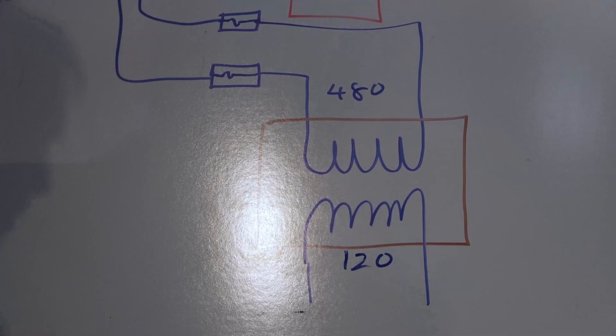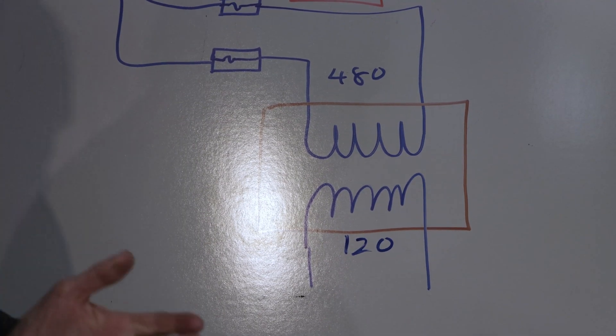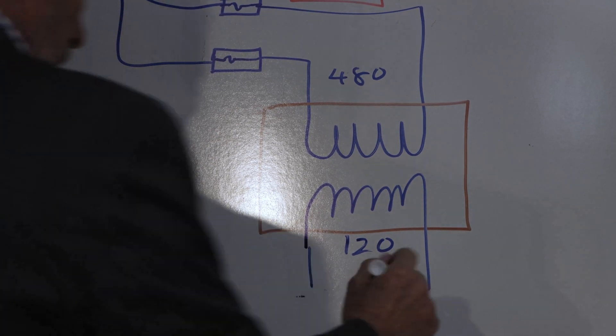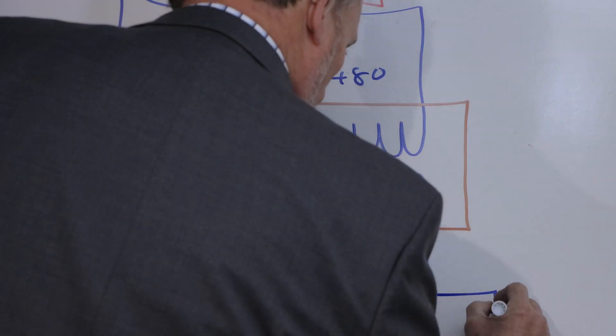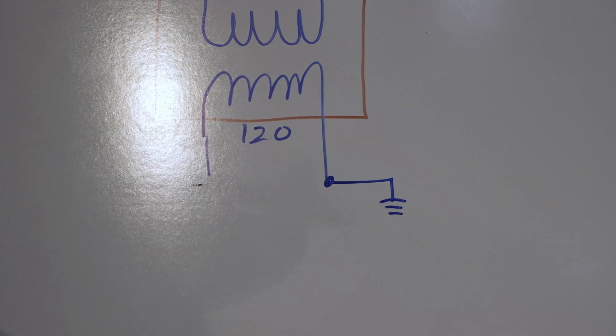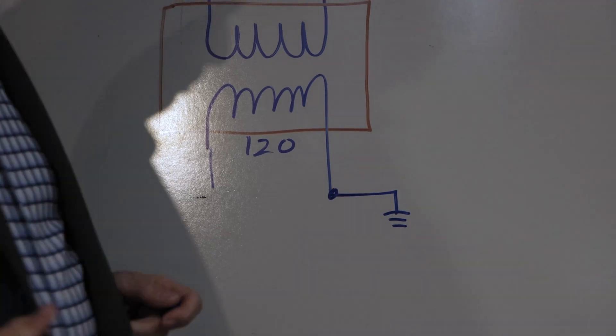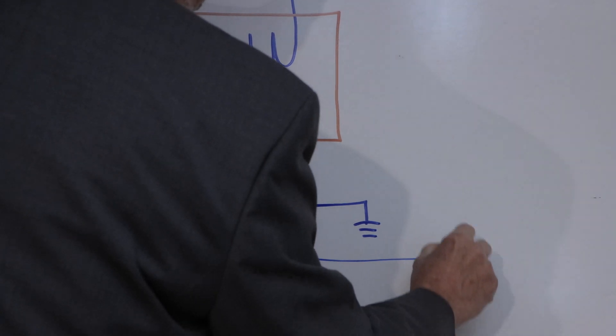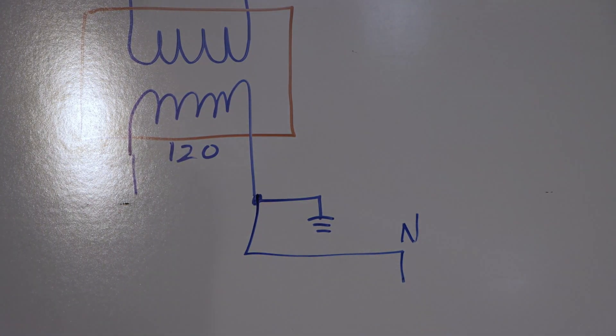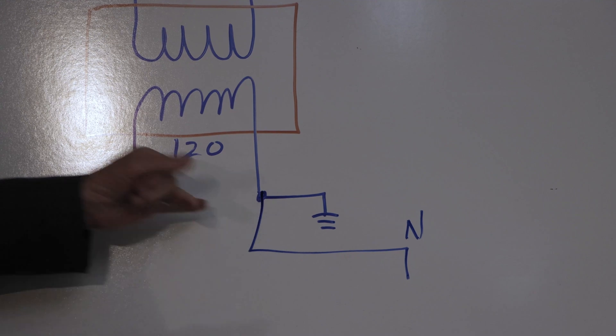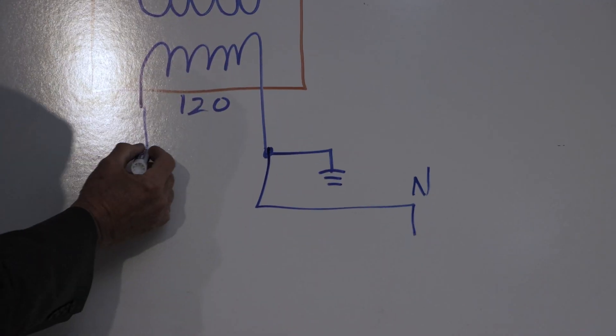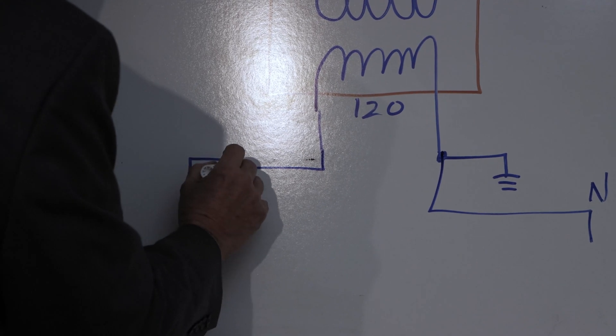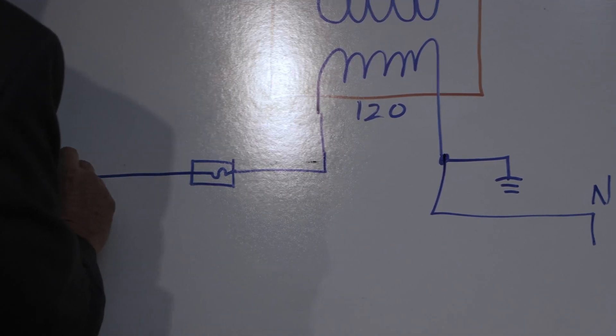And there's a number of different ways that these can be designated. If you ground it, let's say you take this to ground, then you have what's called a grounded control system. And everything from here is actually going to be in neutral. Now, if that's a ground, I've also got a hot side, so I want to protect everything in the field. So I want to put a fuse here.